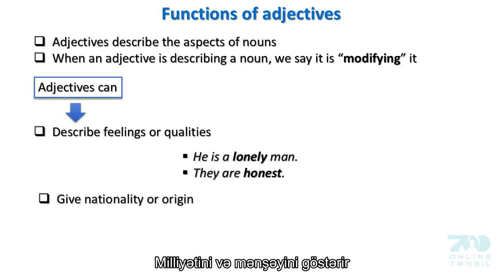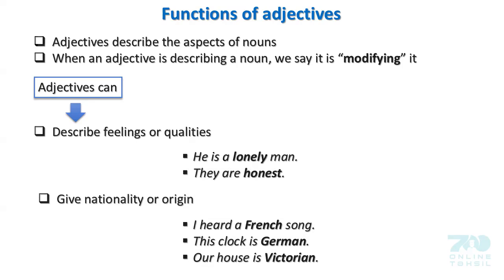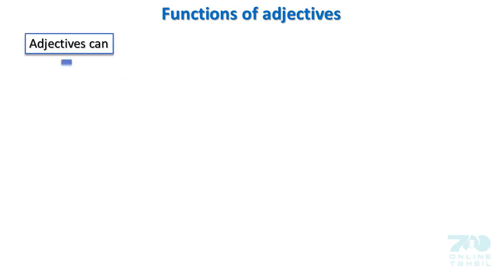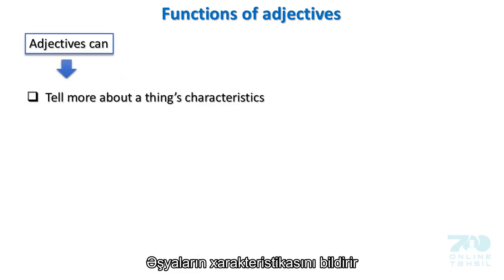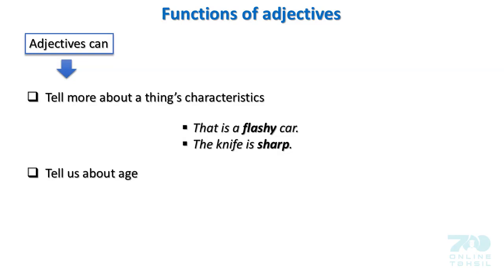Adjectives can give nationality or origin. Examples: I heard a French song. This clock is German. Our house is Victorian. Adjectives can also tell more about a thing's characteristics. Example: That is a flashy car. The knife is sharp.